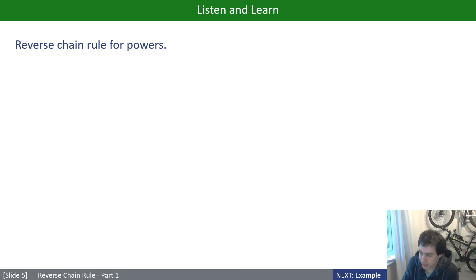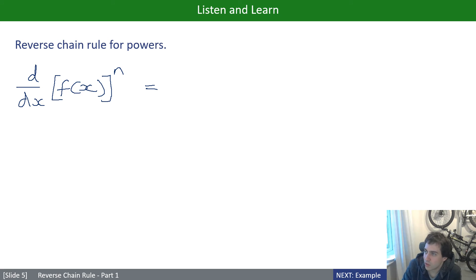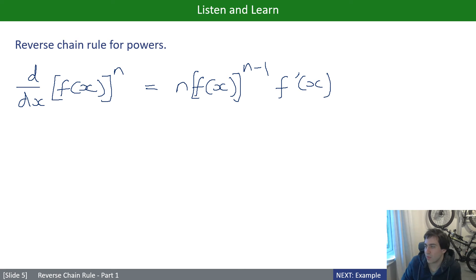Let's start with derivatives. The derivative of [f(x)]ⁿ, using chain rule, is n·[f(x)]^(n−1)·f'(x). That is the derivative of any function raised to the power n.